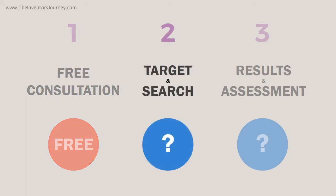The second part of the Perfect Patent Search is where the action really starts. If your invention qualifies for the Perfect Patent Search, I'll send you an email with a link to the first payment. If you put that through, I'll straightaway get down to the first key part of the Perfect Patent Search: converting your invention into patent claims.